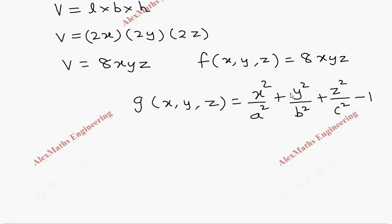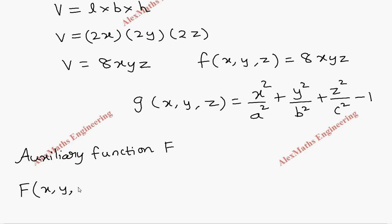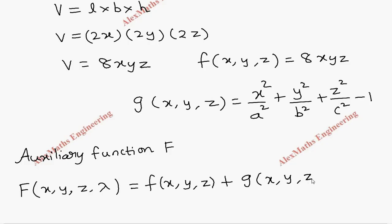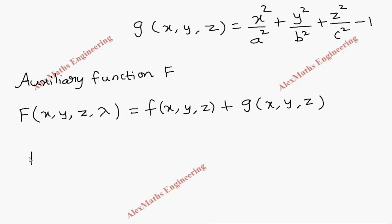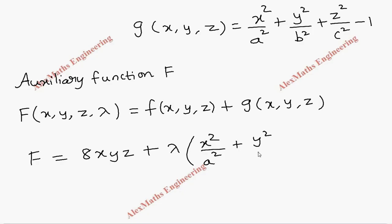Now we have to write the auxiliary function, capital F. This capital F will be in terms of x, y, z and λ, which is f(x, y, z) + λ·g(x, y, z). So capital F becomes 8xyz + λ·(x²/a² + y²/b² + z²/c² − 1).